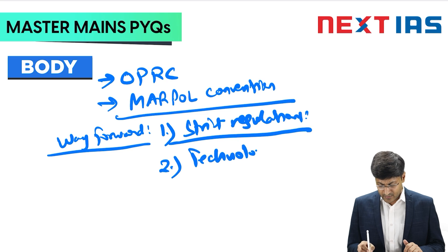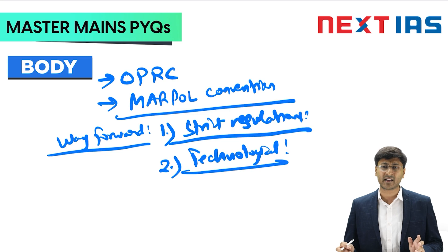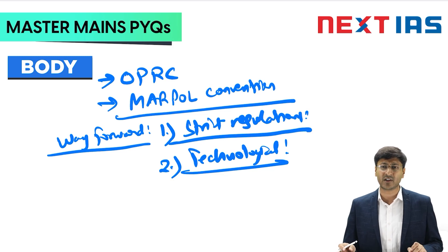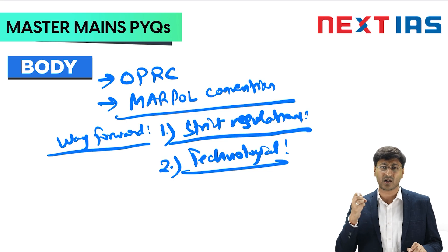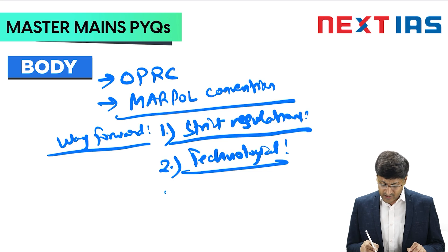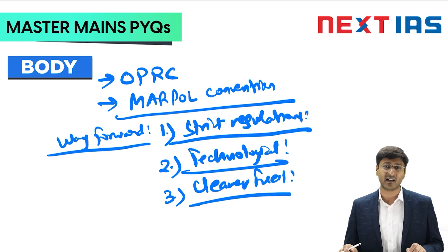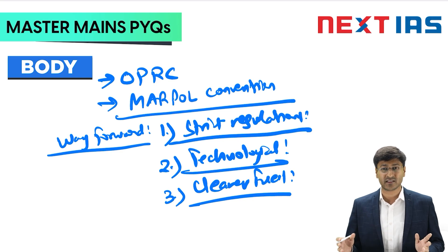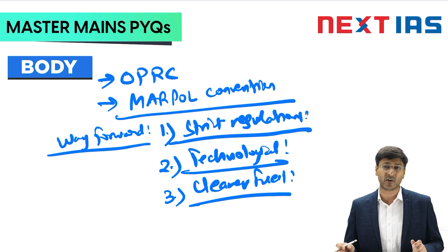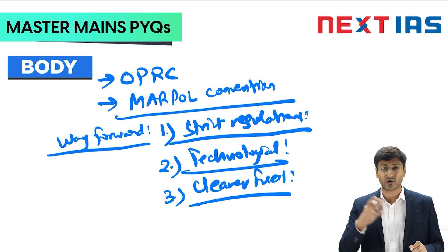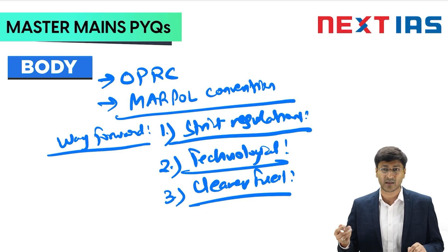The second way forward is technological advancement. Modern technologies can help prevent oil spills, and even if they occur, advanced sponge-like materials can absorb oil from water quickly. Third is promoting cleaner fuels — shifting to solar, wind, and hydro energy will reduce India's dependence on oil imports, which is itself a major driver of oil spill risk.